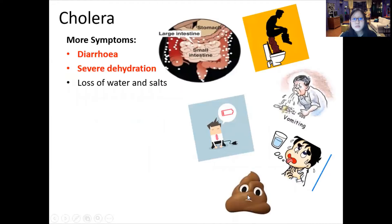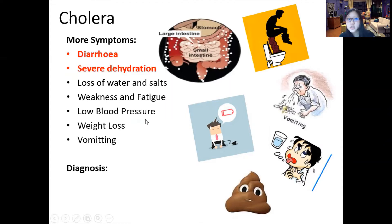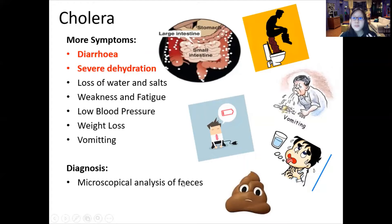More symptoms include loss of salt and water, weakness and fatigue, vomiting, weight loss, and low blood pressure, among others. The most important to remember are severe dehydration and diarrhea. To identify whether a person has cholera, microscopic analysis is used: you take a stool sample, put it under the microscope, find Vibrio cholerae, and if you see it, the person has cholera.